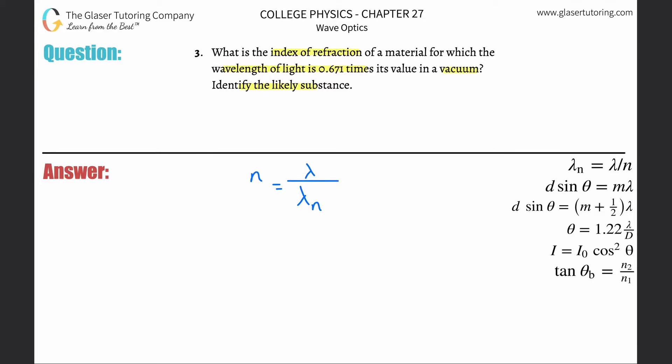Now, they didn't tell us anything like that, but they gave us a ratio here, actually. What did they tell us? They said that the material for which the wavelength of light is 0.671 times its value in a vacuum.